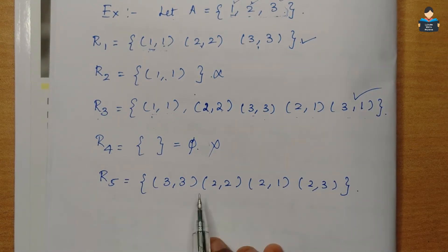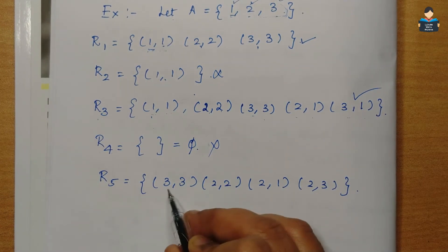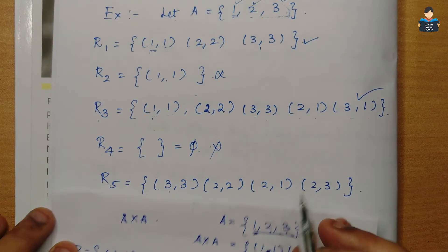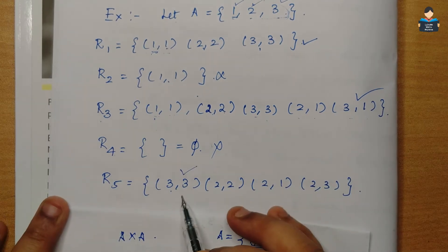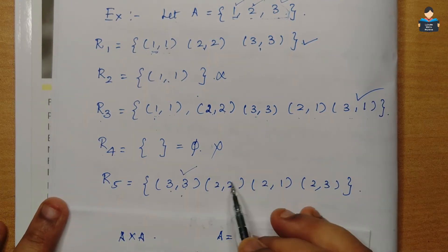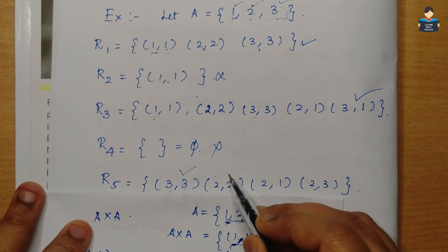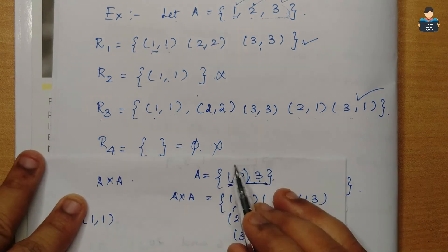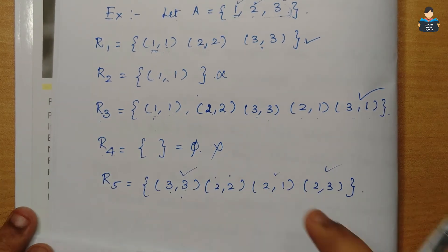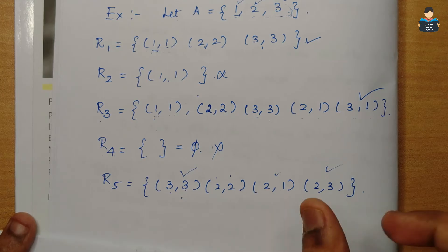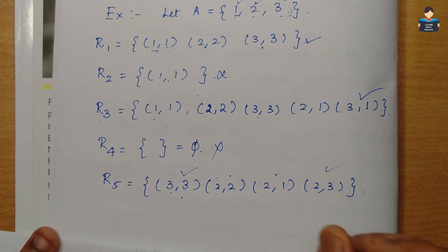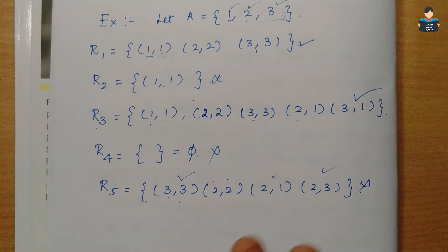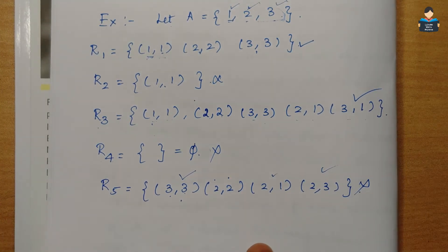R5: set A is {1,2,3}. Here we check if elements like (1,1), (2,2), (3,3) are all present. Looking at the pairs, we find (2,1), (2,3) but not all required (a,a) pairs. So R5 is not reflexive. From these examples, you can understand the reflexive condition easily.